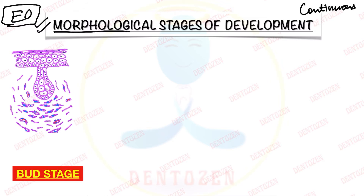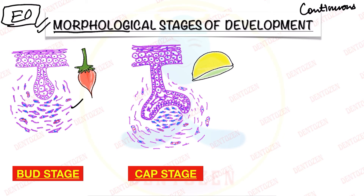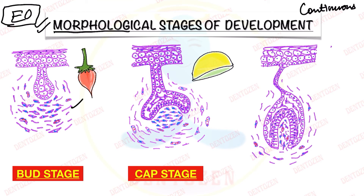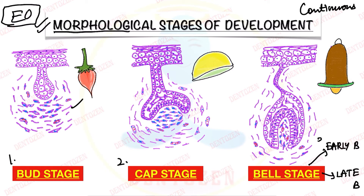The first stage is bud stage in which the enamel organ is like a bud. The second stage is cap stage in which the enamel organ is like a cap. And the third stage is bell stage in which the enamel organ is like a bell. This bell stage can further be divided into early bell stage and late bell stage or advanced bell stage. So there are four morphological stages of tooth development: first is bud stage, second is cap stage, third is early bell stage, and fourth is late bell stage.